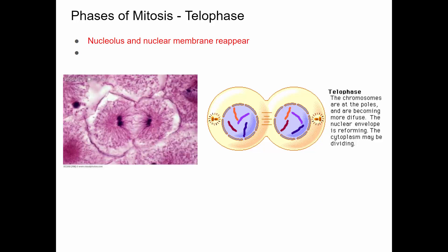Once the chromosomes are pulled to opposite ends of the cell, a new nucleus starts to form around each set. They start to unwind, and then the actual cell itself starts to split — that process is called cytokinesis. So after this finishes, what do we end up with? Two cells. And how many chromosomes will be in each cell?